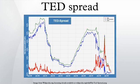Historically, the long-term average of the TED has been 30 basis points with a maximum of 50 basis points. During 2007, the subprime mortgage crisis ballooned the TED spread to a region of 150 to 200 basis points. On September 17, 2008, the TED spread exceeded 300 basis points, breaking the previous record set after the Black Monday crash of 1987.